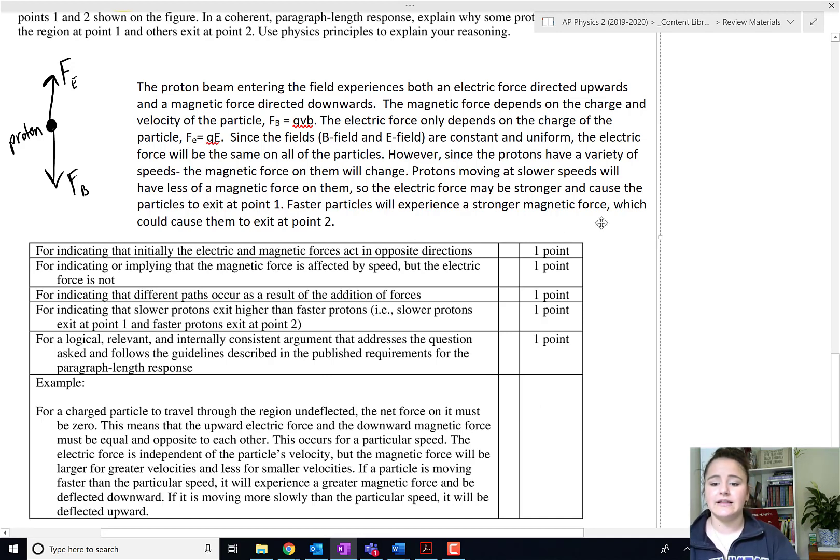I got one point for indicating the electric and magnetic fields act in opposite directions. That point was right in that first sentence. For indicating or implying the magnetic force is affected by speed, but the electric force is not, I got that point. For indicating that the different paths result is the addition of the forces. So you do need to state that both forces are acting at it at the same time, which is a little implicit in my response.